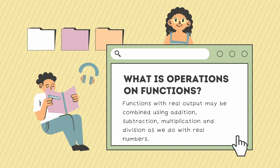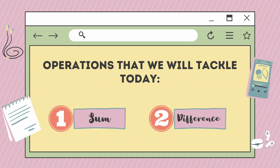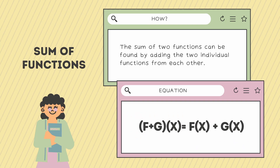Now that we have an idea of what operations of functions sum and difference mean, let's talk about the operations we will tackle today, which is sum and difference. First, we'll talk about the sum of functions. The sum of functions can be found by adding the two individual functions from each other. The equation for the sum of functions is: (f + g)(x) = f(x) + g(x).